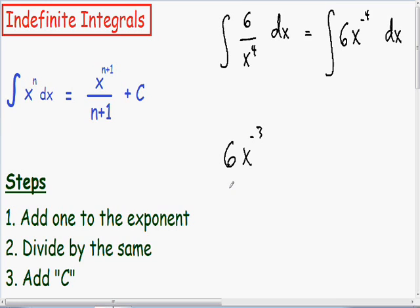Our step number 2 is we want to divide by the same. So since we have a negative 3 exponent, we want to divide by negative 3. And we can't forget our last step. We always need to add our constant c.